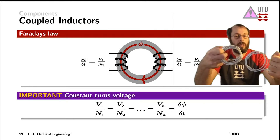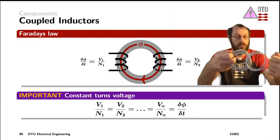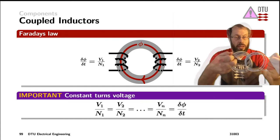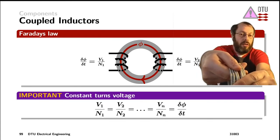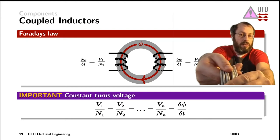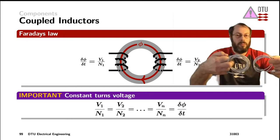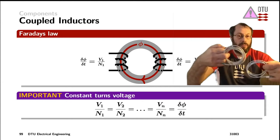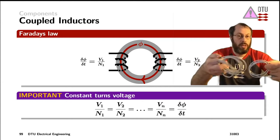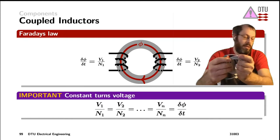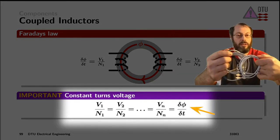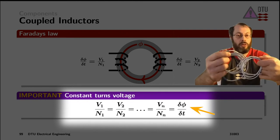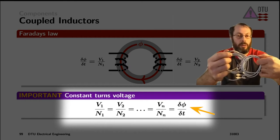Looking at the mutual field between those two where it's coupling, and having twice as much windings on the other one — that is eight windings — we end up getting eight volts across the terminals on that one, as the common magnetic flux dictates that the voltage per turn stays the same for all the windings that are sharing a common flux.